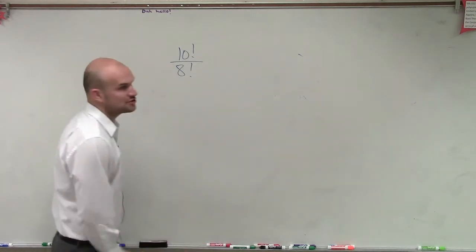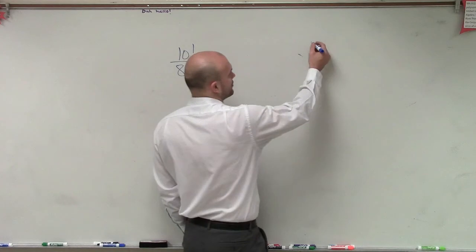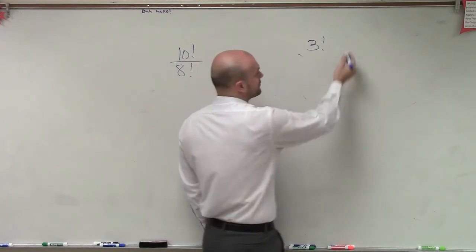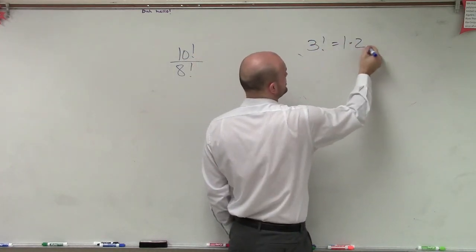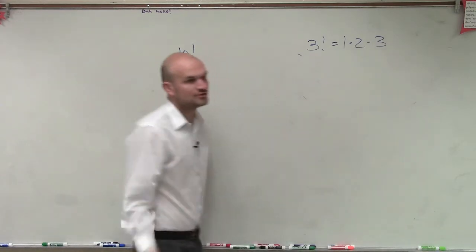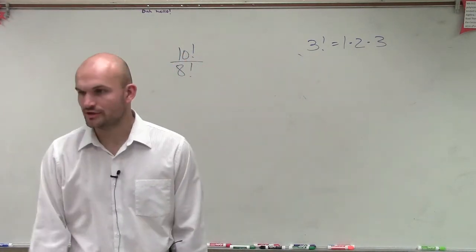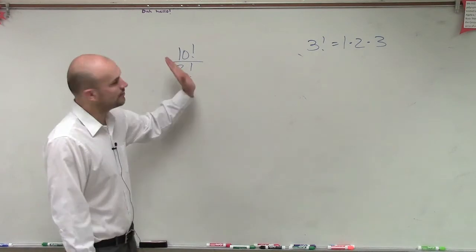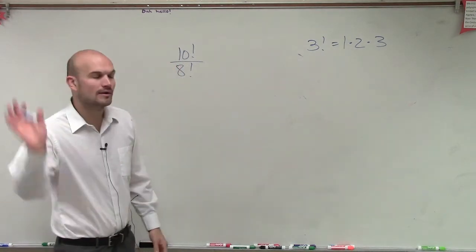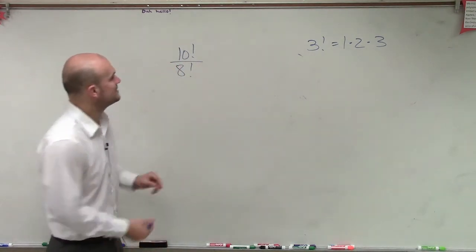First of all, let's just go back with a quick definition of factorial. Factorial 3 equals 1 times 2 times 3. You start at 1, you keep on multiplying all the way up until you get to your number.